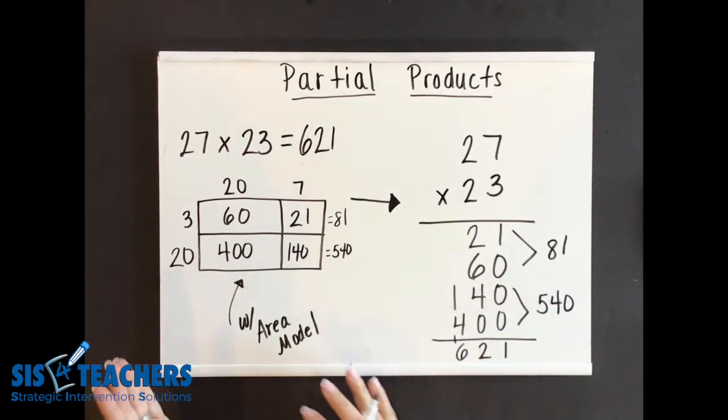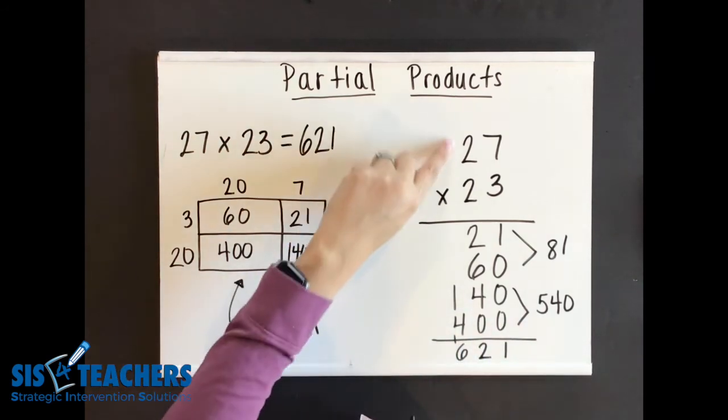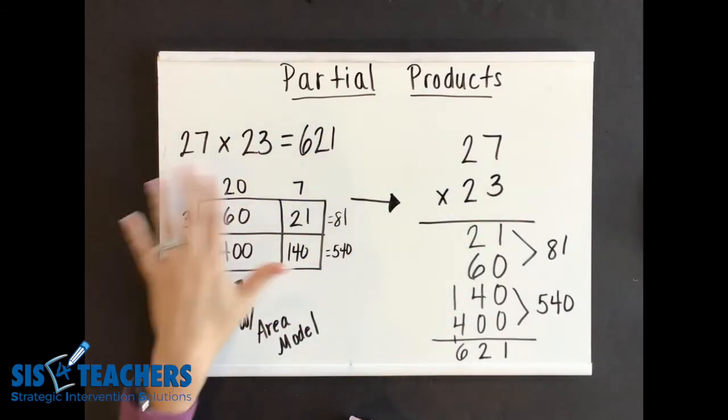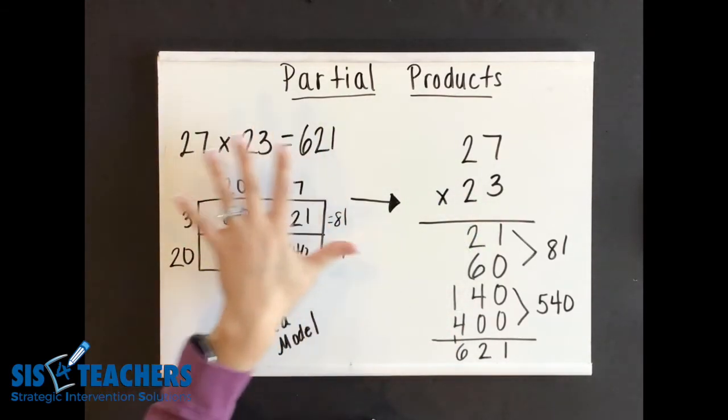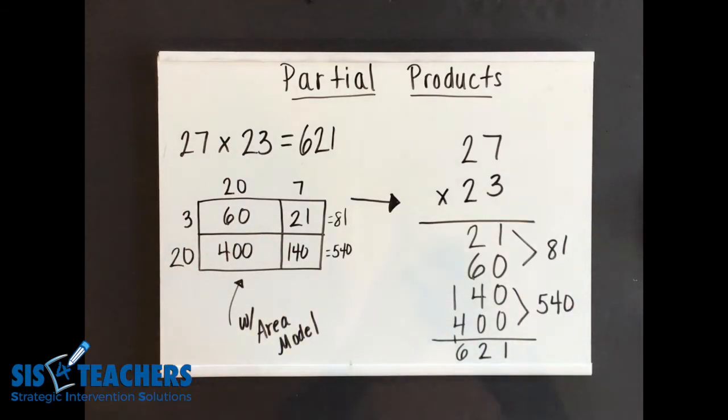Once we've learned this, and kids have had lots and lots of practice, we want you to try to do this with higher numbers. You know, maybe it's 127 times 23. Moving up with using partial products with the area model, just using the partial products, and then moving into the traditional way, which would be looking at it by pulling all of these things together.